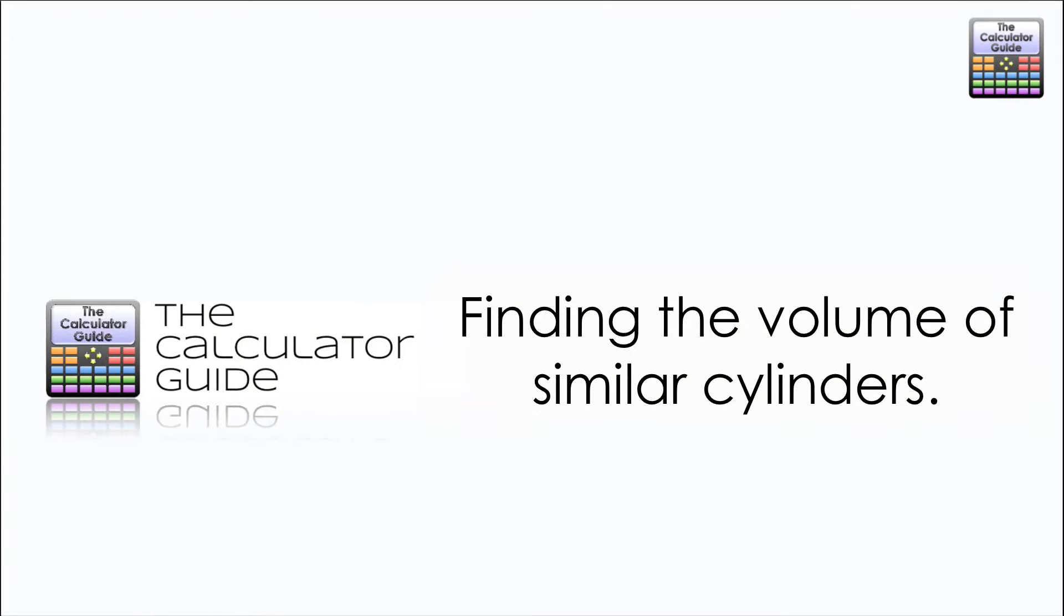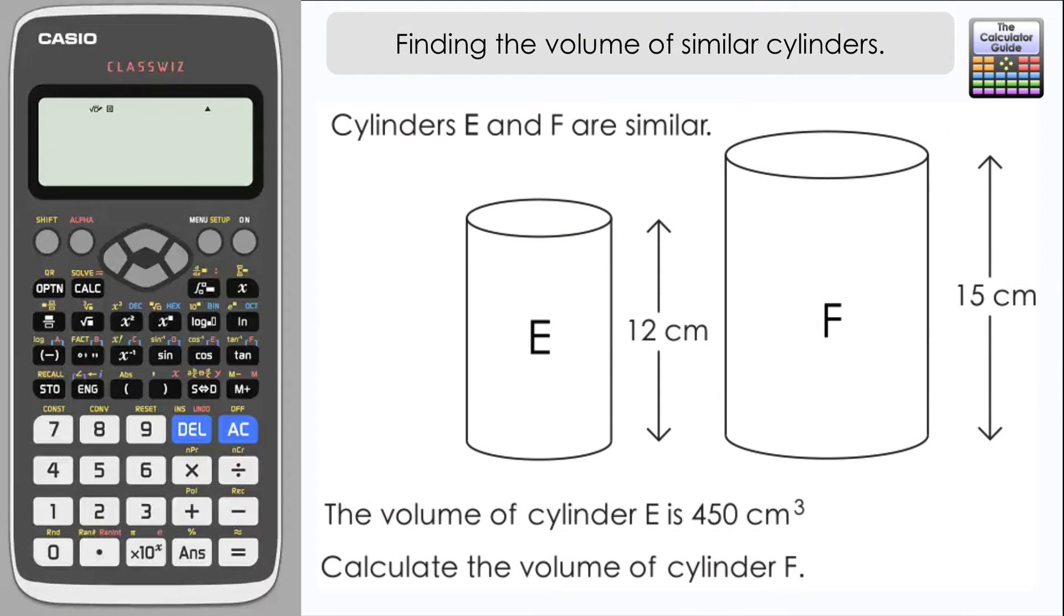Hello and welcome to the calculator guide video on finding the volume of similar cylinders. Here we have a question. Cylinders E and F are similar, so essentially one cylinder is an enlarged version of the other cylinder.